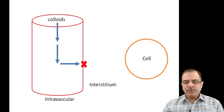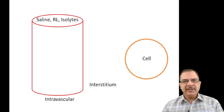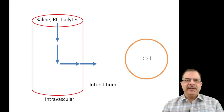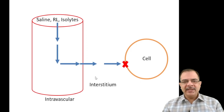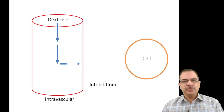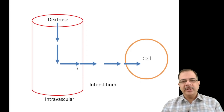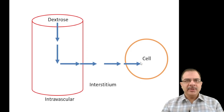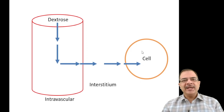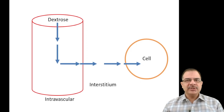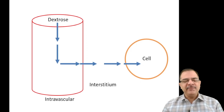Electrolytes such as saline, Ringer lactate, or Isolytes will cross the blood vessel into the interstitium but do not enter cells — they remain in the extracellular space. Dextrose or plain water easily crosses the vessel wall and also enters cells, distributing equally across intravascular, interstitial, and intracellular compartments. So dextrose is used when there is intracellular dehydration.